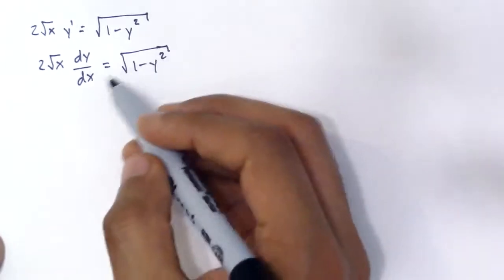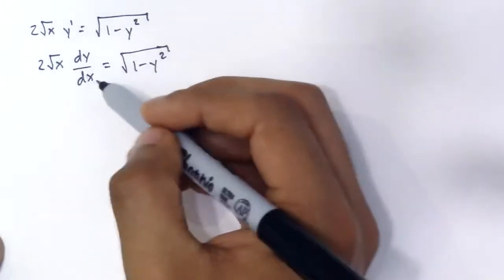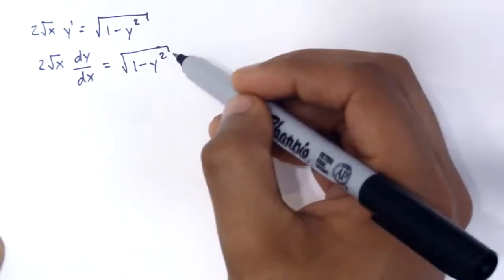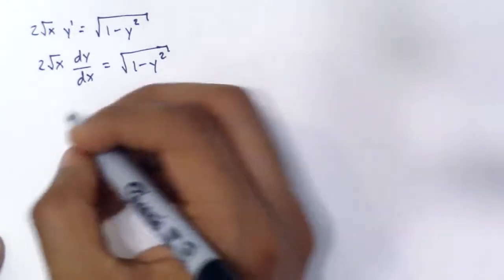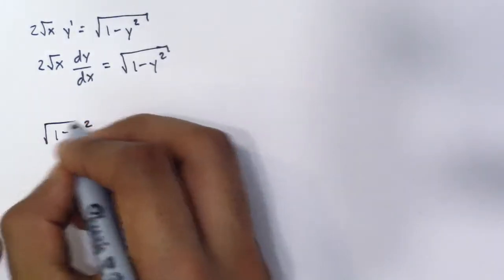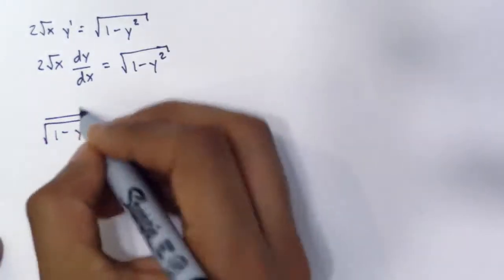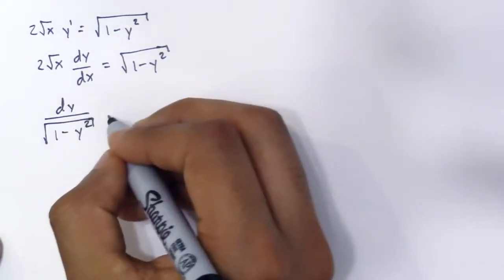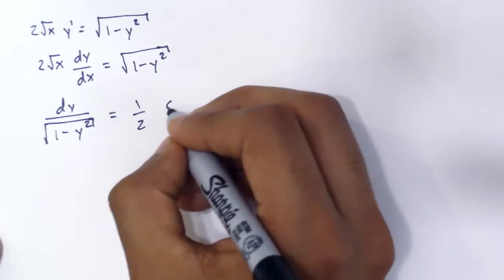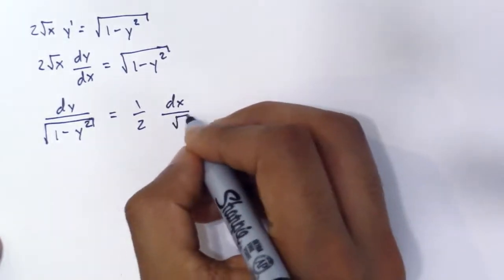So what we're going to do is divide this whole thing over here and divide by this over here and move this dx over here. So you can do 1 minus y squared square root divided by dy equals 1 half times dx over the square root of x.